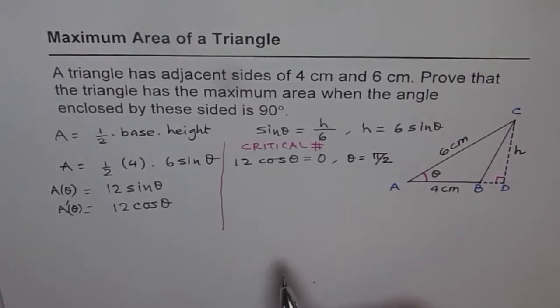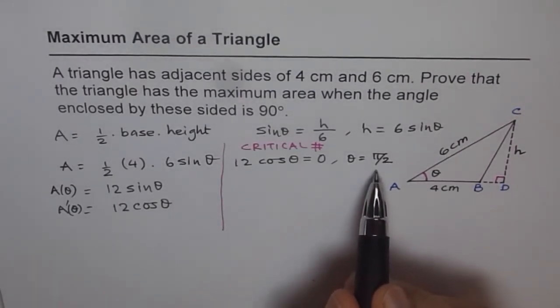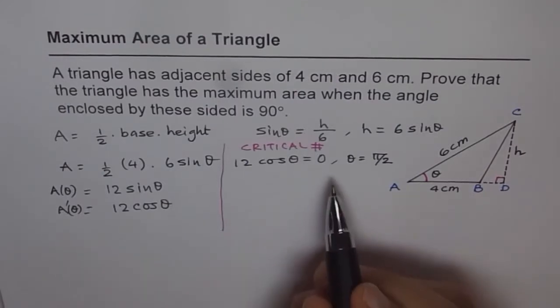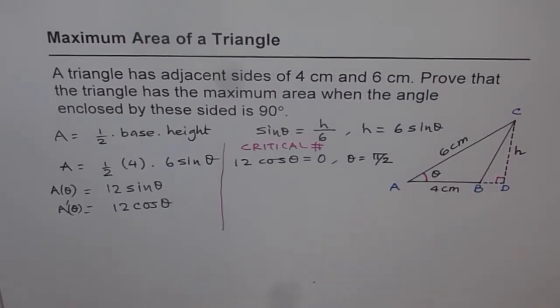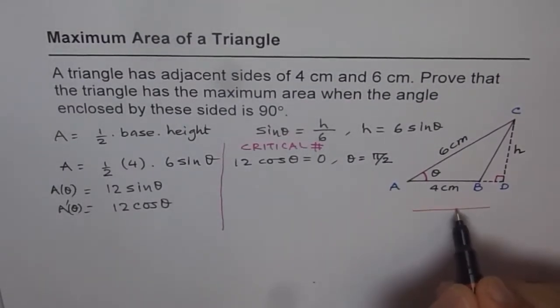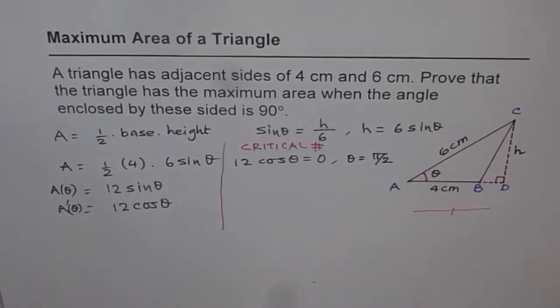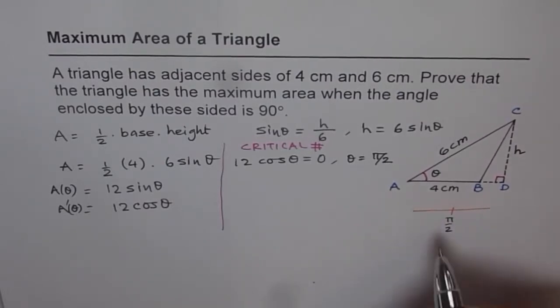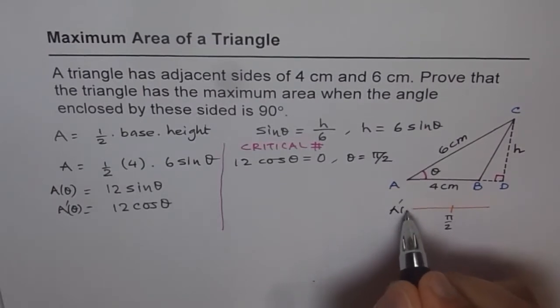Now we need to prove that at this critical point we indeed have a maximum. Now it is not necessary that critical point whichever you get you will always get a maximum or a minimum. Now how to prove that you have a maximum here? So we have two ways to do it. One is we can always check the rate of change around theta.